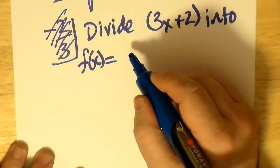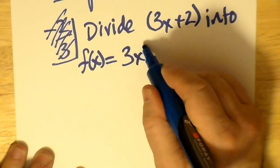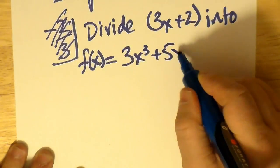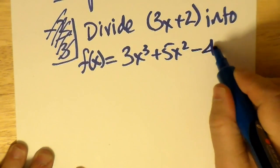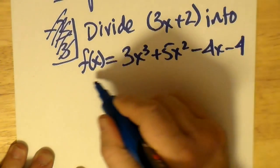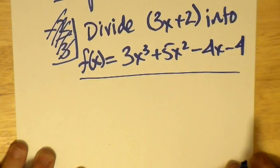For today I'm going to divide 3x plus 2 into the cubic 3x³ plus 5x² minus 4x minus 4.